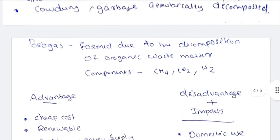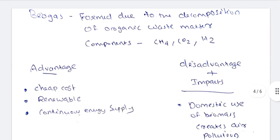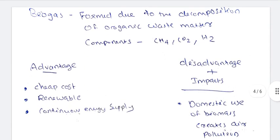What is biogas? Biogas is formed due to the decomposition of organic waste matter. Organic waste matter is decomposed to produce biogas. It contains carbon dioxide and hydrogen. Advantages include being cheap in cost.